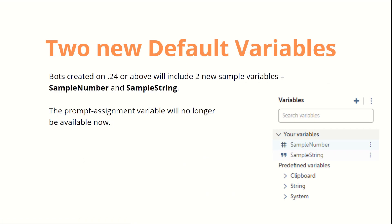Seventh, we have two new default variables: Sample Number and Sample String. The prompt assignment variable will no longer be available. As you can see in the image, these two variables are for storing your number data type and string data type, and they are created by default by the platform.